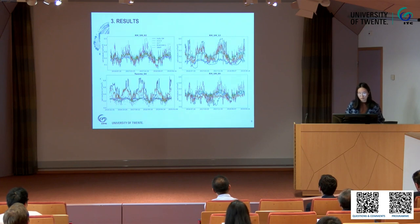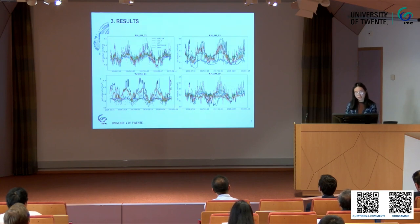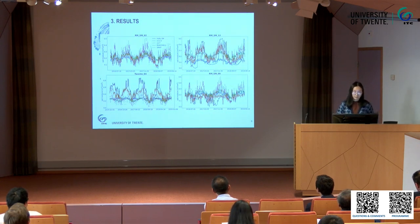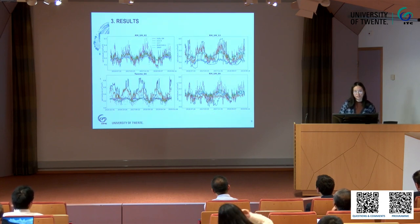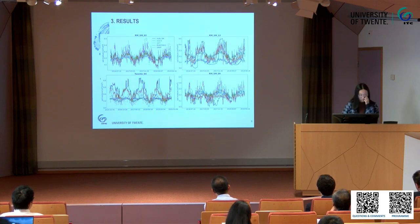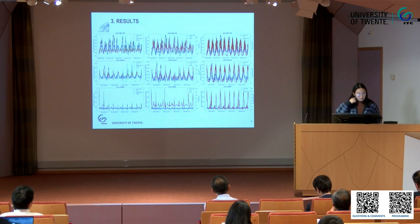For stations in the Netherlands, we show the version history — the blue line is our previous version and the yellow line is our current version. The current version performs better than the previous one and also better than ESA CCI and SMAP, because the Netherlands has higher soil moisture in certain areas.